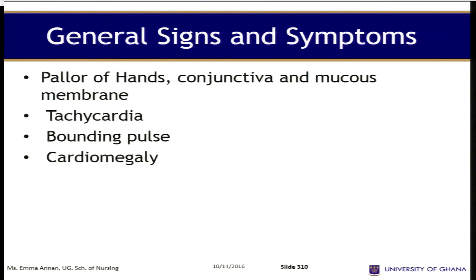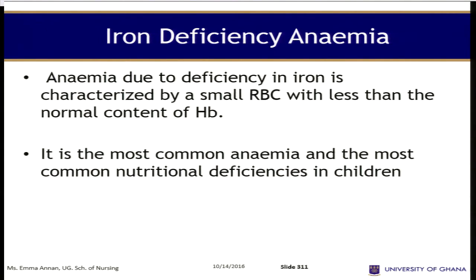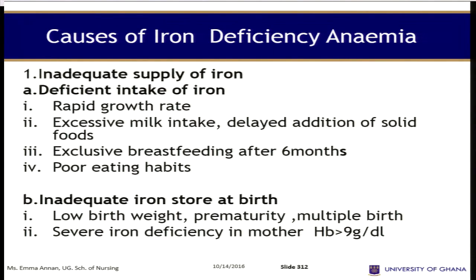Iron deficiency anemia is due to deficiency in iron, characterized by small red blood cells with less than the normal content of hemoglobin. It is the most common anemia and the most common nutritional disorder in children. Causes include inadequate intake of iron as a result of rapid growth rate, excessive milk intake, delayed addition of solid food, and poor eating habits. Also, inadequate iron stores at birth such as in low birth weight, prematurity, or multiple pregnancy.